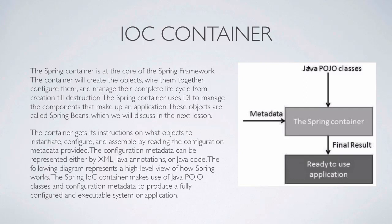The following diagram represents a high-level view of how Spring works. We have the Java POJO classes — essentially the bean classes — and then we have the metadata, which would be the XML file. The Spring container works to instantiate the POJO classes from the metadata. In our previous lesson, the metadata was the XML file with two beans, and the POJO class was the Point class — resulting in a Point object passed to our application. The Spring IoC container uses POJO classes and configuration metadata to produce a fully configured and executable application.